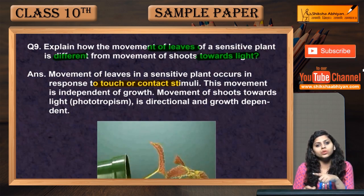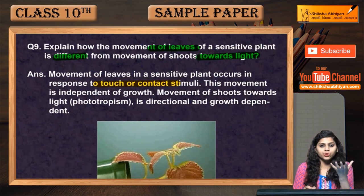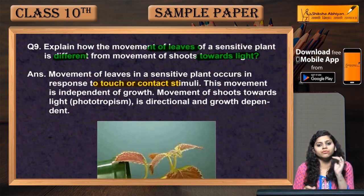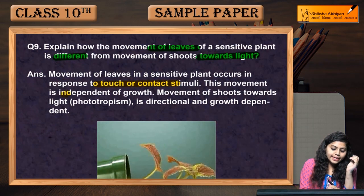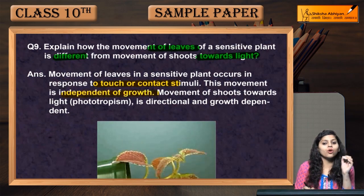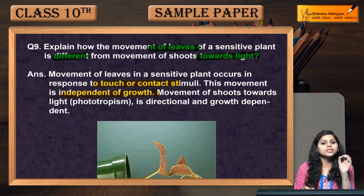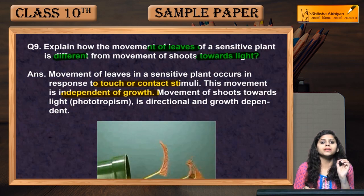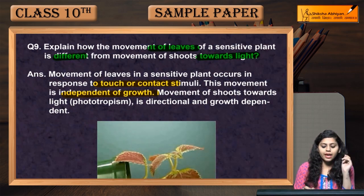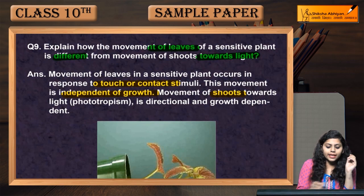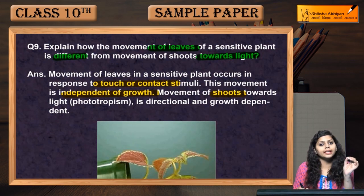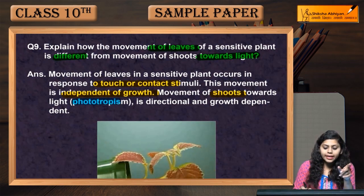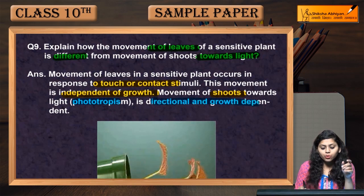The shoot movement towards light — light is the main factor. This movement is independent of growth. Shoot movement towards light is called phototropism. It is directional and growth dependent.